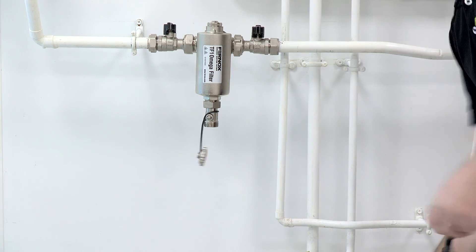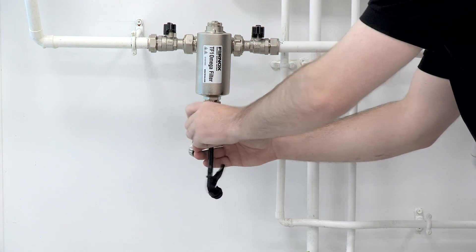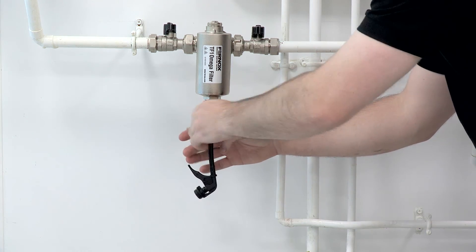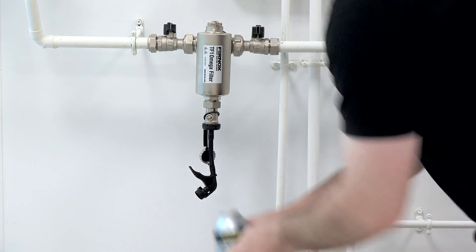Attach the TF1 filter adapter to the bottom of the drain valve. Connect the can to the bottom of the trigger.